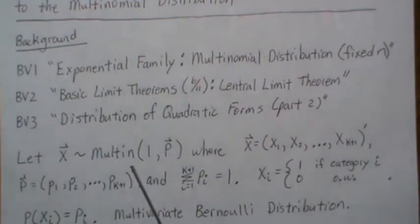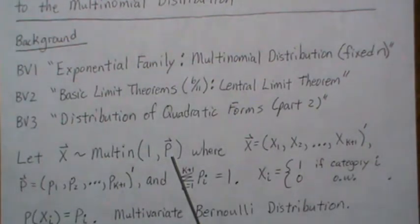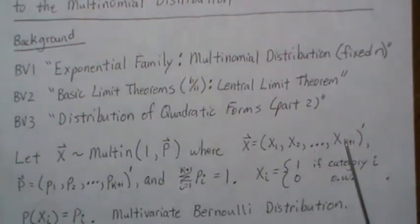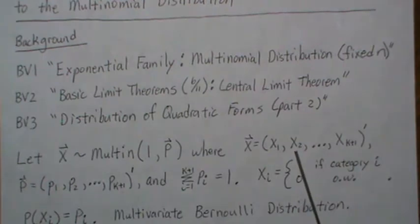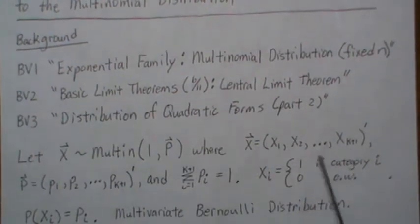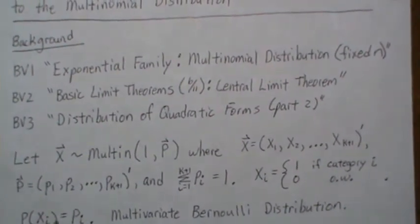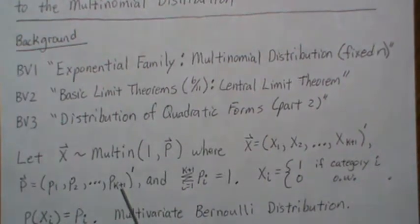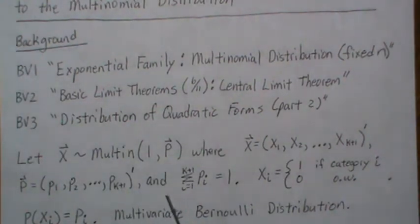In this video we're going to let X be multinomial with N of 1 and P, a vector of parameters. X is going to be a K+1 by 1 vector, and each of these X's can take on a 0 or 1, but only one of them. Like in the binomial case where you get to pick one of two categories, here you get to pick one of K+1 categories, so all of them will be 0 except for 1. The P vector has each component representing the probability of that specific category, with the restriction that they sum to 1.